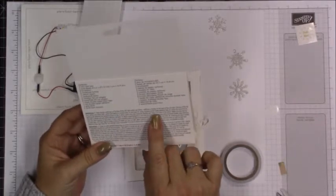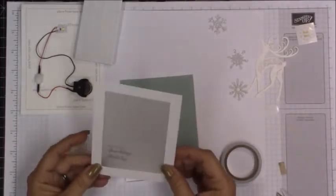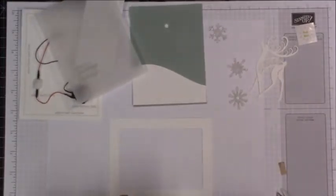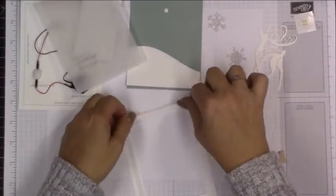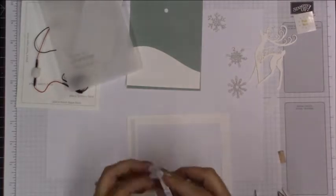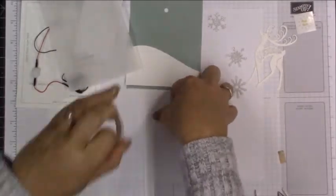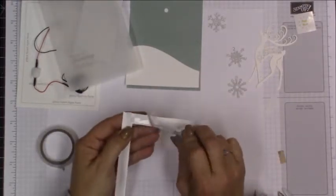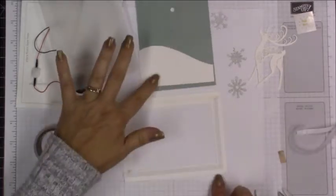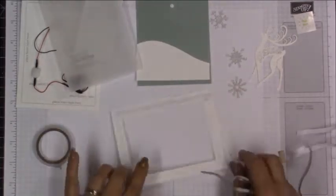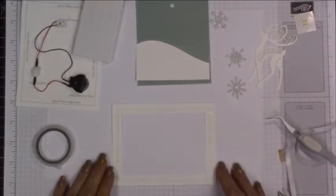So the first step would be to adhere your vellum to that outer frame. And I'm just using the tape that came in the kit. But if you had a glue runner or just whatever tape you have on hand would be fine. So I'll put this vellum down. And then adhere the little snow bank behind the sentiment.